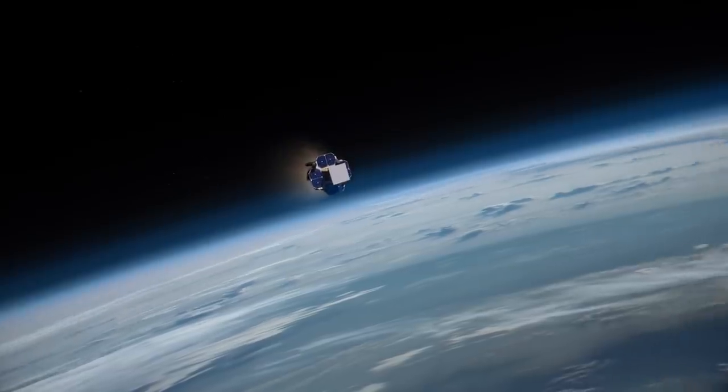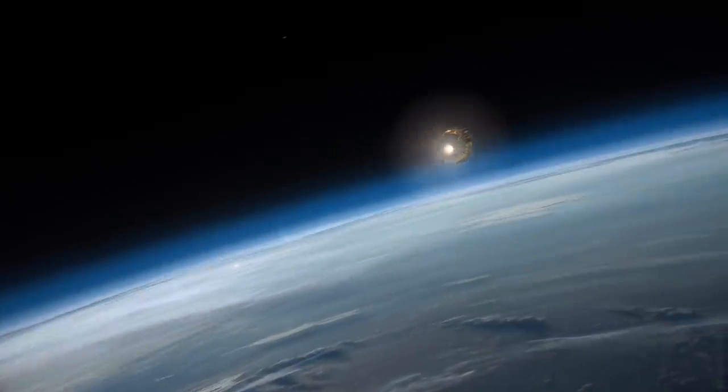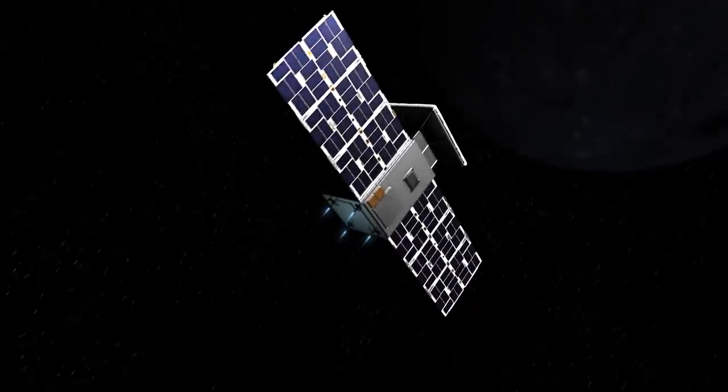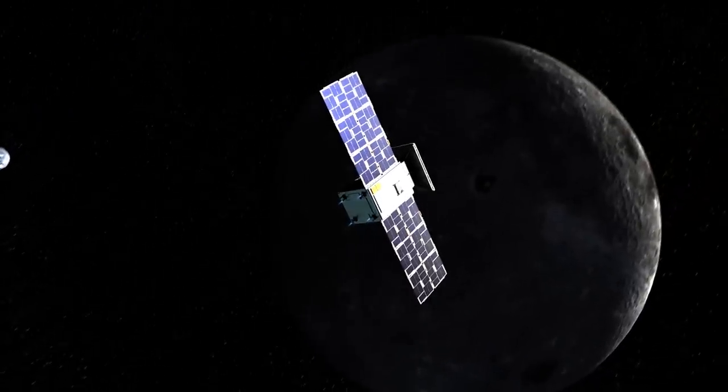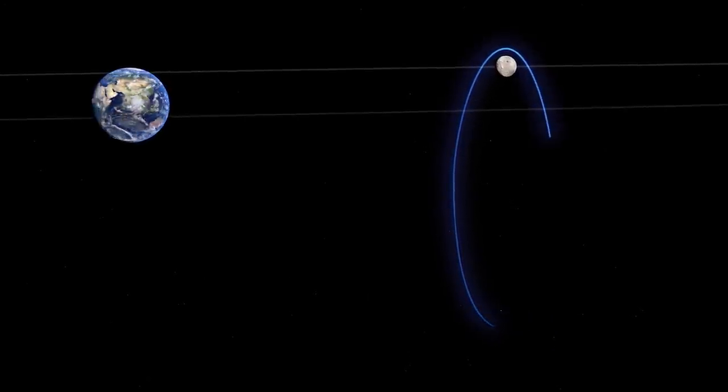The gravities of Earth, the Sun, and the Moon will help propel it into deep space. As it nears its destination, Capstone will use its propulsion system to enter an elongated path around the Moon.